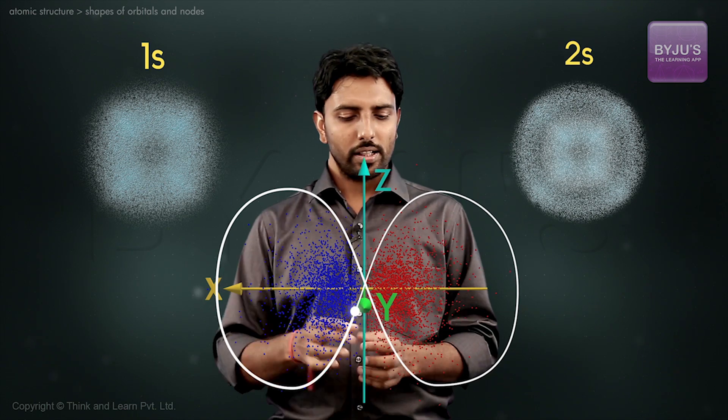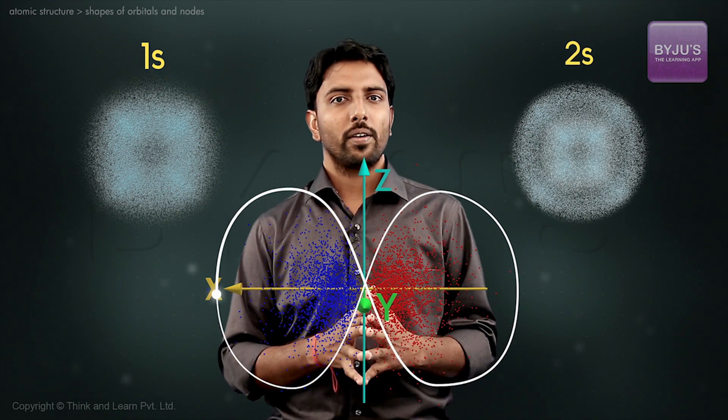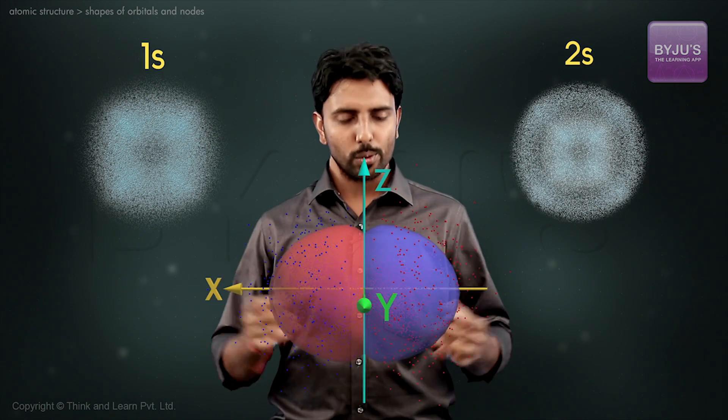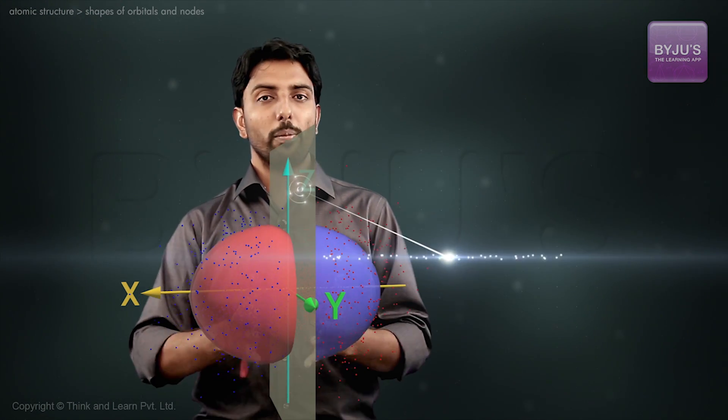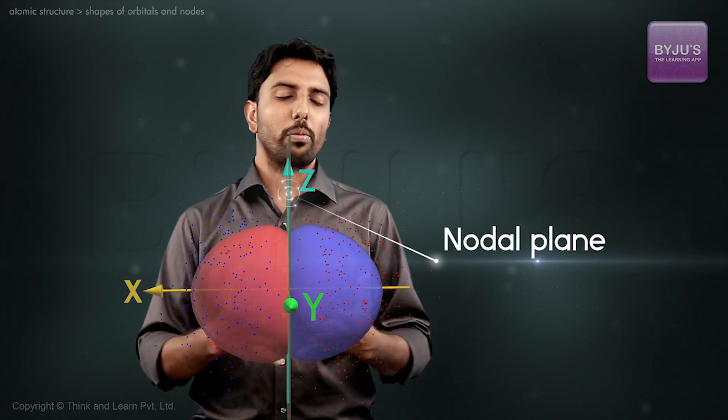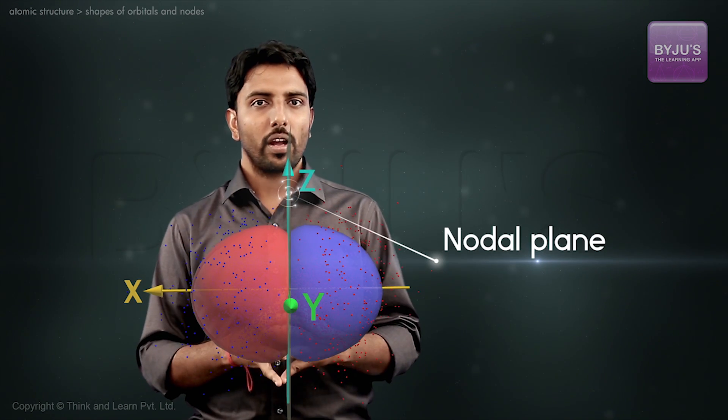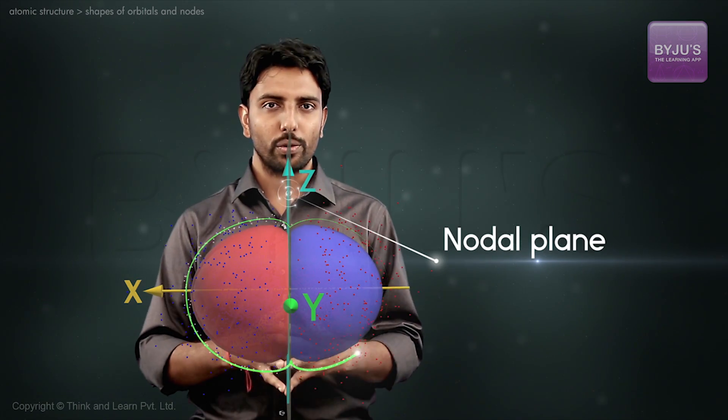It resembles a dumbbell, or it looks like two spheres divided by a nodal plane where we don't have the probability of finding an electron.